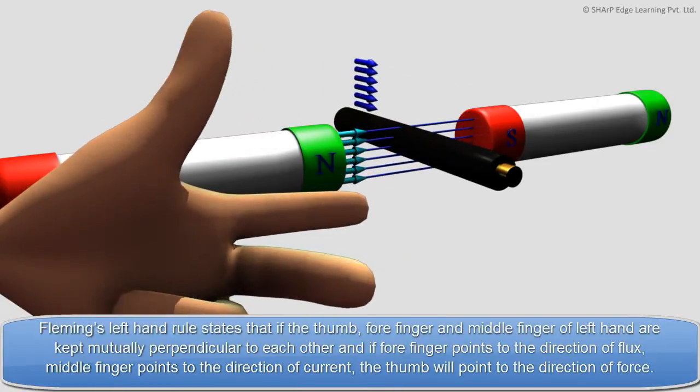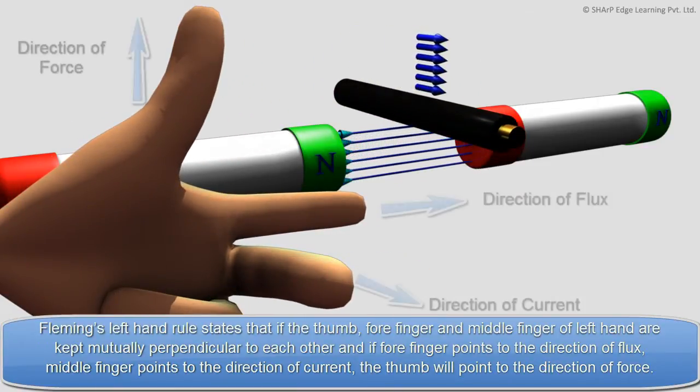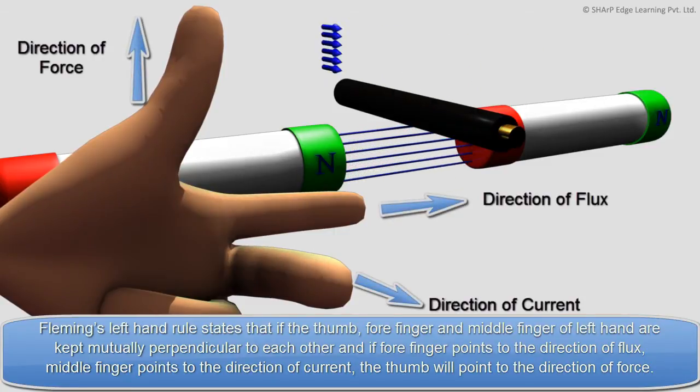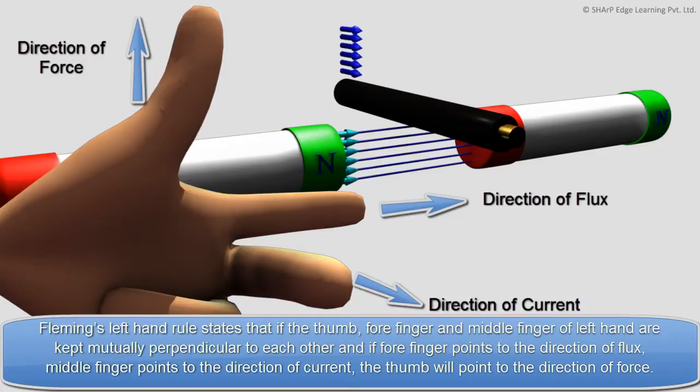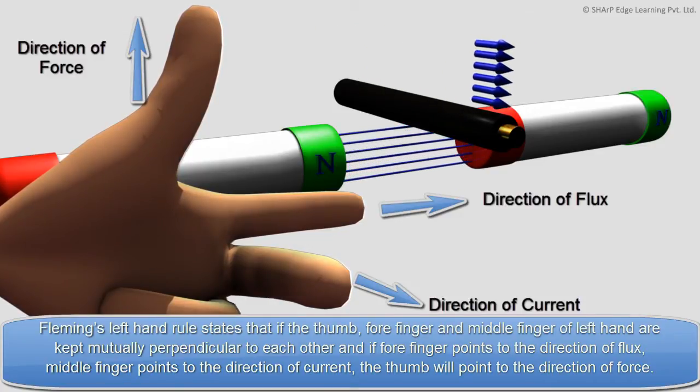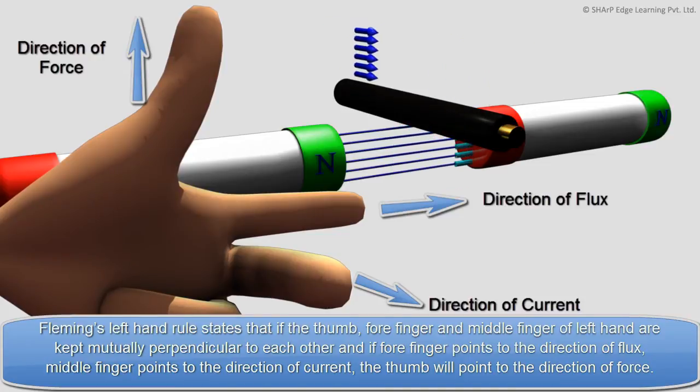Fleming's left hand rule states that if the thumb, forefinger and middle finger of left hand are kept mutually perpendicular to each other, and if forefinger points to the direction of flux, middle finger points to the direction of current, the thumb will point to the direction of force.